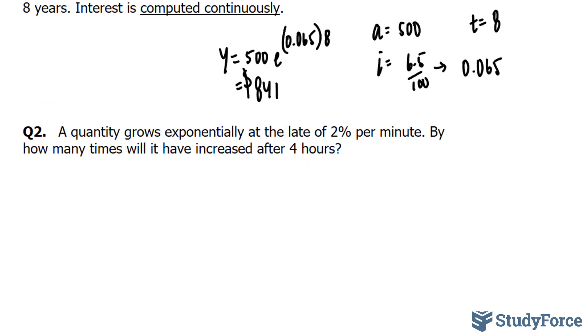In question 2 we're asked, a quantity grows exponentially at a rate of 2% per minute. By how many times will it have increased after 4 hours? Notice that in this question they don't tell us the initial amount. And if they ever give you a situation where they don't tell you the initial amount, you can always set a to 1 as a default.